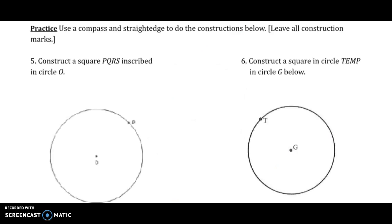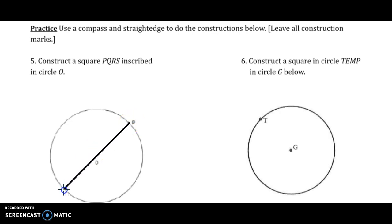In these two examples, they want you to use a given point on the circle. So if you want to pause and try this on your own before watching, you can do that, or you can watch and then pause for the next one. The first step is to draw a diameter — I'm going to draw it so that P is one of the endpoints.